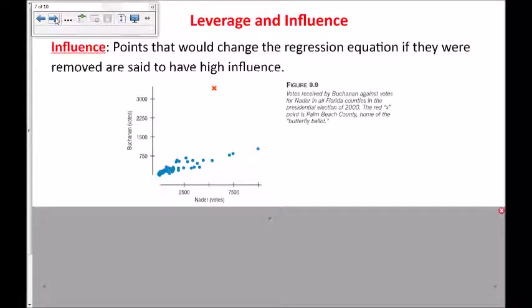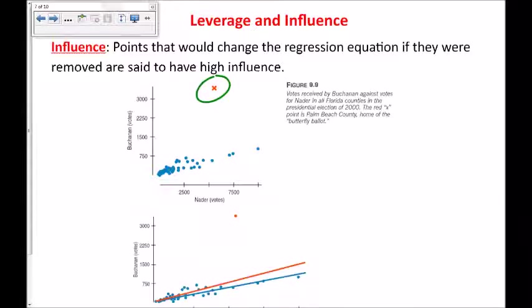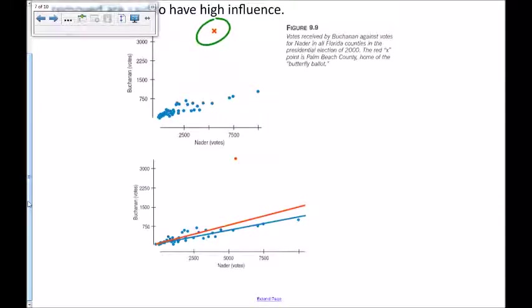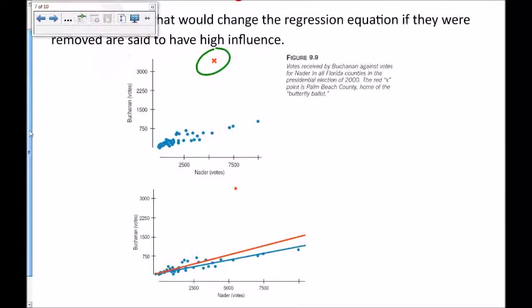Influence are points that would change the regression equation if they were removed. So this point up here, now in 2000 there was a slight change in the voting procedures called a butterfly ballot and the place where that was used gave a pretty significant outlier. And down here we have a graph of the regression equation if that was removed or not, and it gives a different enough equation that we would say that that point is an influential point or that it has high influence.